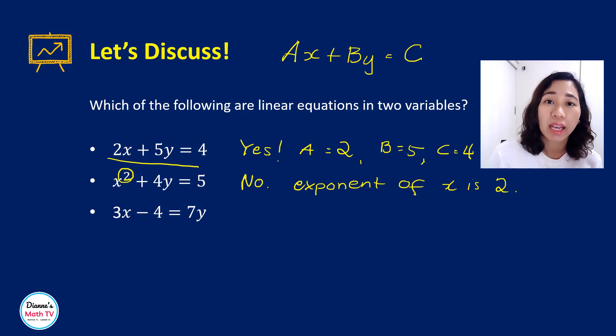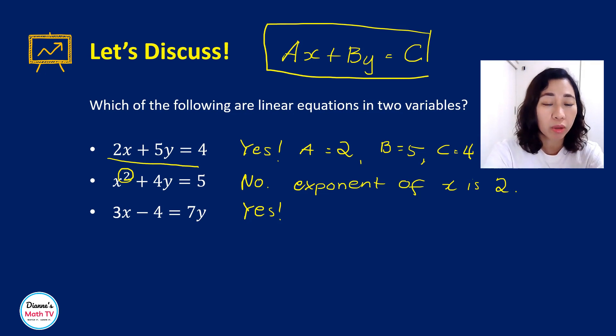Next, 3x minus 4 equals 7y. Now, the answer, this is yes. You can always put it in the form ax plus by equals C. What is this saying? The x and y go, they are together in one side, correct? This is saying that the variables, the x and y appear on one side and the constant on the other side.